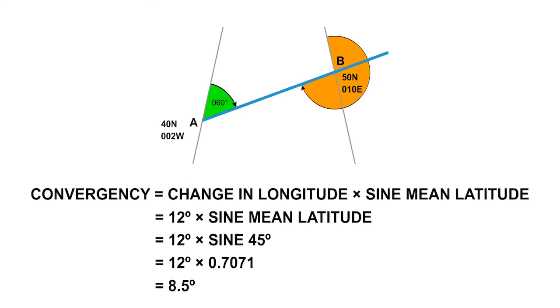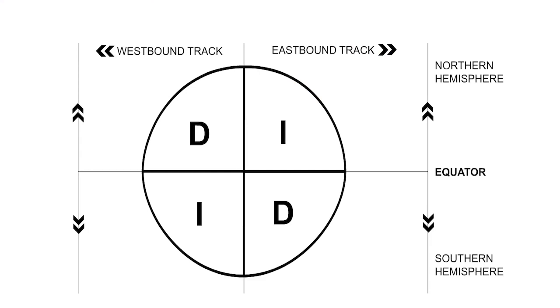Now there are two ways to solve this problem, depending on which definition of convergency you prefer. If you use the definition that convergency is the changing great circle track direction between two points, then the great circle track has changed 8.5 degrees between A and B. It left A on a track of 060. So using the DIID rules for increasing or decreasing track, we are looking at a track going eastwards in the northern hemisphere. The track angle will increase.